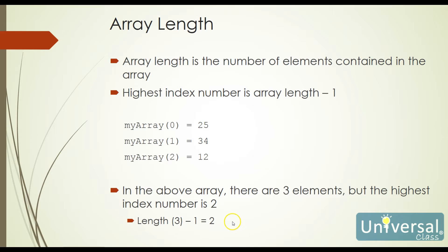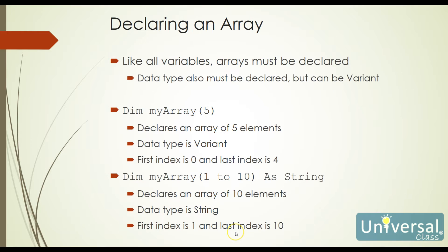The length of the array, which is 3, minus 1 is going to be equal to 2. That's important because we need to keep track of — if we have 10 elements in our array, then the highest index number is going to be 9. If we try to go beyond the number of elements that our array actually has, we will get a subscript out of range error message.